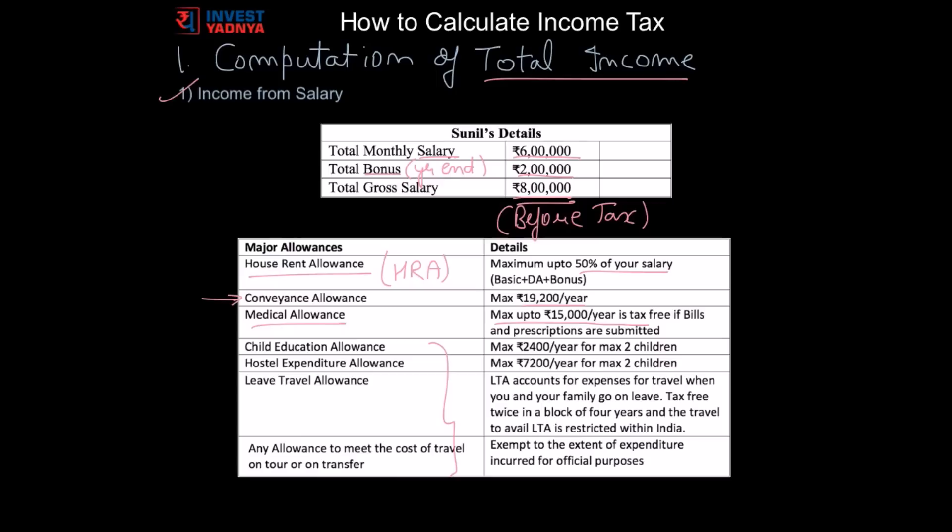So for our example, let's assume Sunil lives in a rented apartment in Mumbai and pays rupees 10,000 per month as rent and gets HRA benefit on whole amount. He also gets full conveyance allowance exemption and gave bills of rupees 5,000 for medical reimbursement allowance as well.